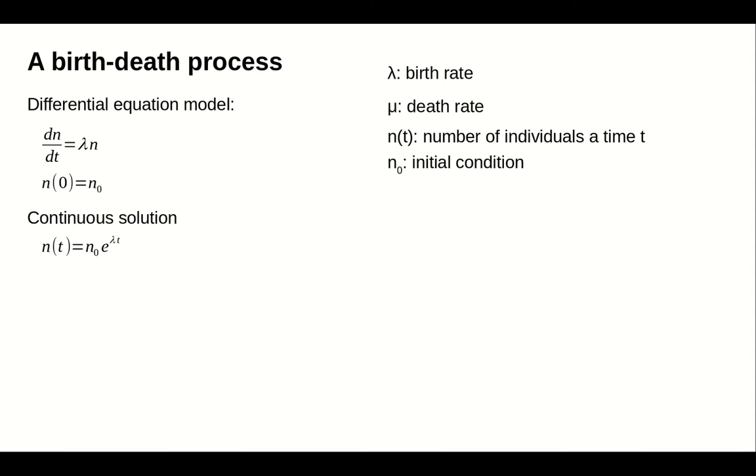To add the death rate mu to our differential equation model, we simply add the term minus mu times n to the differential equation. Can you solve this differential equation? I strongly urge you to pause the video and write down the solution. The solution to the differential equation with both births and deaths is n(t) equals n0 times e to the power of lambda minus mu times t.